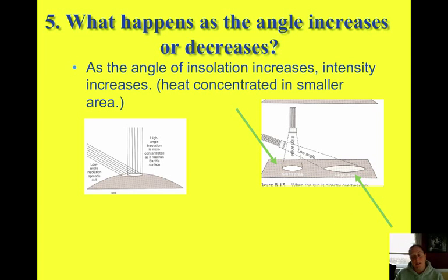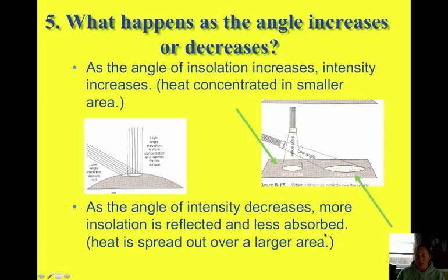As the angle of insulation increases, the intensity also increases. So this heat gets concentrated in a smaller area. If you decrease the angle of insulation, which means it's getting more slanted, the intensity of insulation is less, it's less absorbed, and it's reflected more by the surface. And you spread that heat out over a larger area.